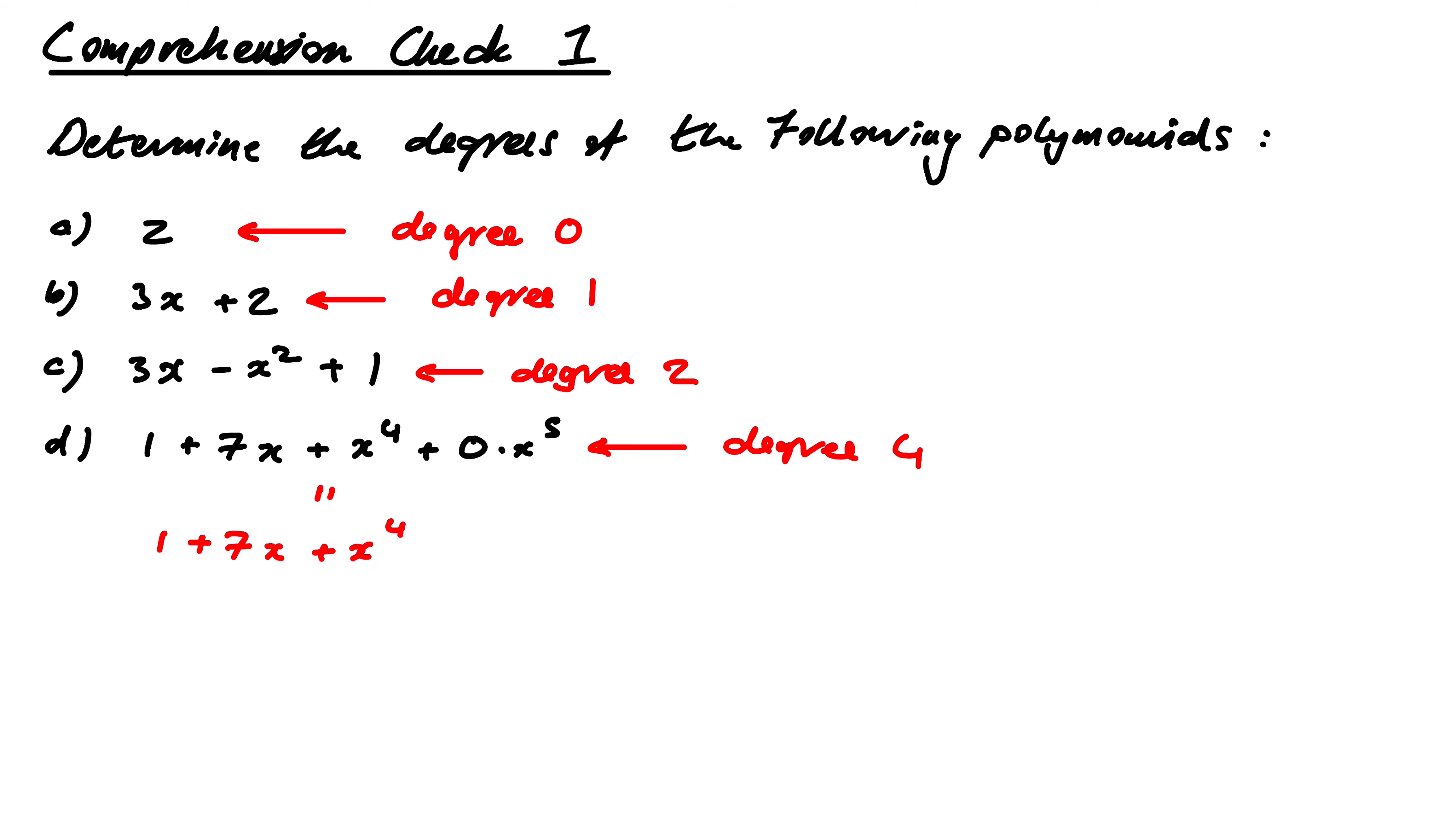And if we want to know what the coefficients are, well, a0 would be equal to 1. a1 would be equal to 7. a2, well, there's no x squared term, so this is 0. There's no x cubed term, so a3 is equal to 0. And then a4 would be equal to 1.